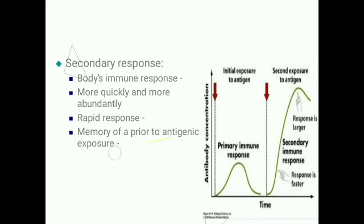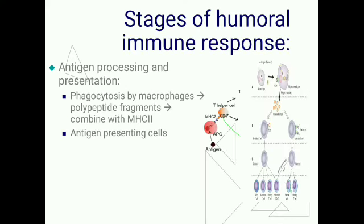Stages of humoral immune response: the first stage is antigen processing and presentation. Whenever any antigen enters the body, it is first phagocytosed by the macrophage, and this phagocytosis results in formation of polypeptide fragments. These fragments are bound with MHC2, which is present on the surface of the macrophage. These polypeptide fragments bound with MHC2 are presented to the lymphocyte. This process is antigen processing and presentation by the macrophage, which is known as the antigen-presenting cell.